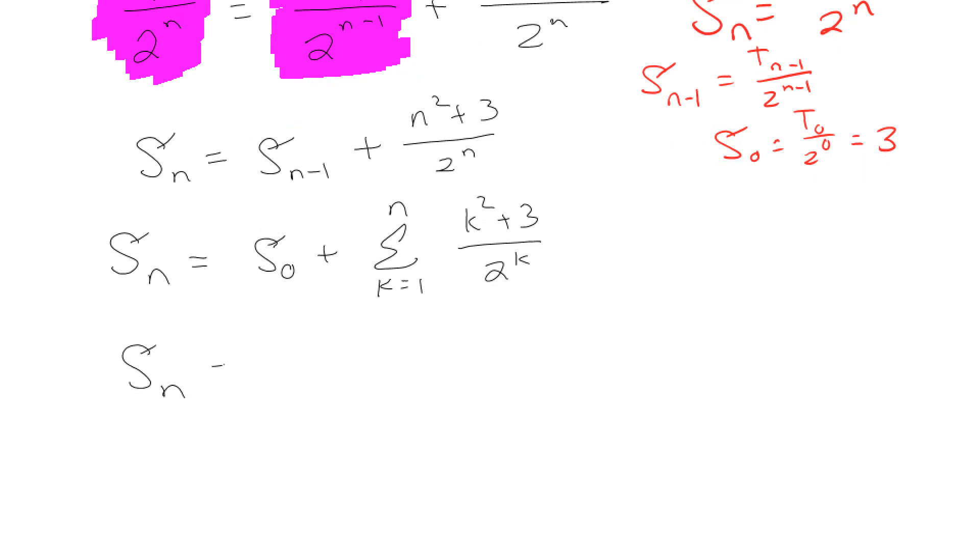All right, so S sub n is equal to 3 plus this crazy mess over 2^k. Now, believe it or not, there is actually a way to simplify this. Isn't that exciting?